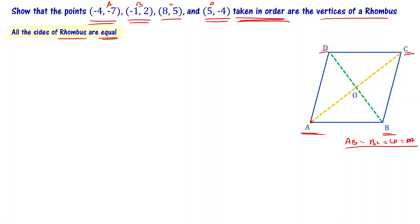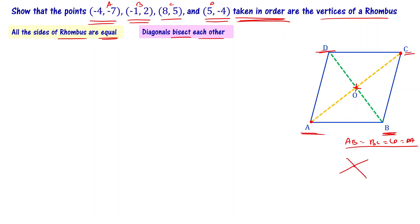Also, looking at the diagonals: diagonal AC has a midpoint, and diagonal DB also has a midpoint. In other words, we can say that the diagonals bisect each other — meaning the midpoints of both diagonals are the same.